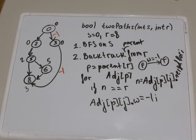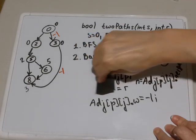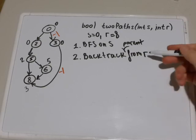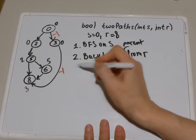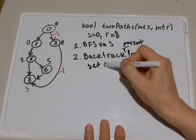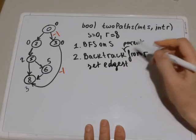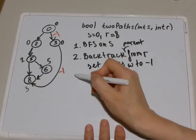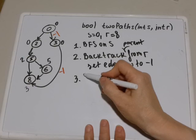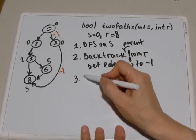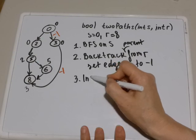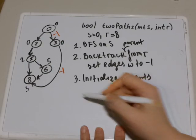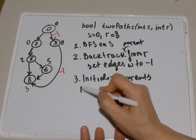So that when we run BFS, let me remove this information here, we will run BFS and set edge weights to negative 1. So step 3, you need to re-initialize the parents array again. Initialize the parents array again and run BFS on s again.